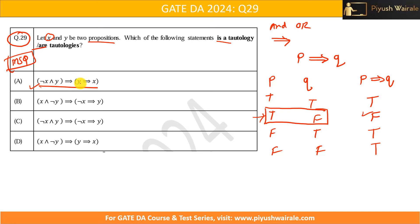We know a tautology must be true for all values of x and y. Instead of verifying all cases, we will try to find a case where the statement becomes false. If the statement becomes false for any combination, it is not a tautology.